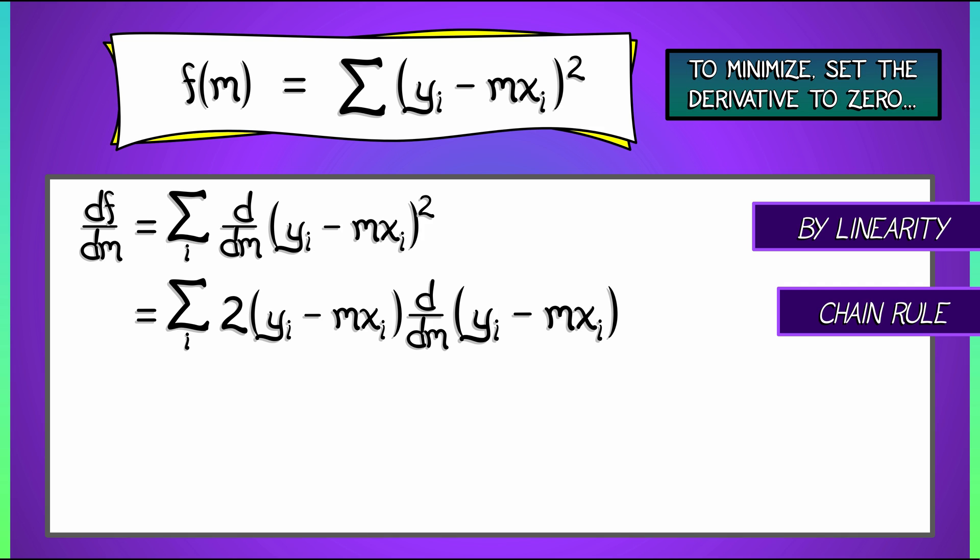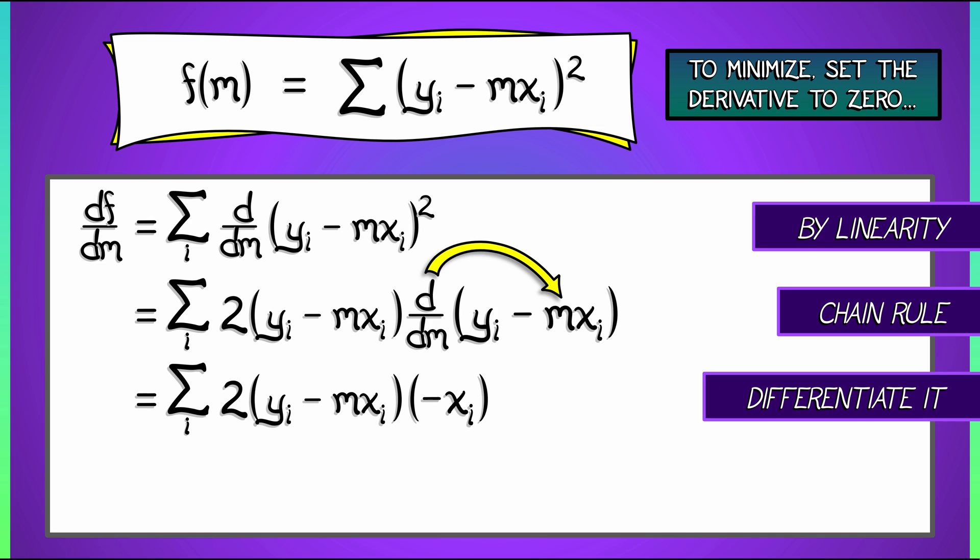Now, because we're differentiating with respect to m, there's just that one m that appears there. And what is the coefficient in front of it? It's minus xi. Therefore, taking that derivative, we get the sum over i of two times quantity yi minus mxi times quantity minus xi.